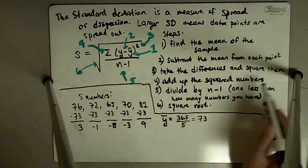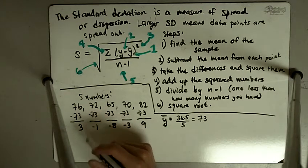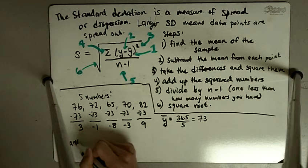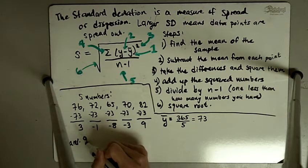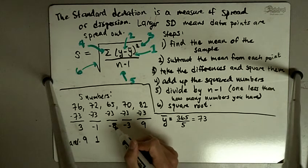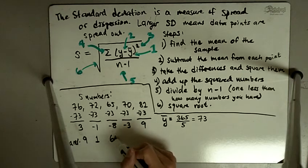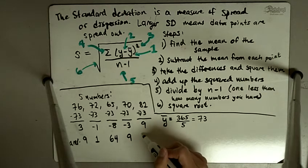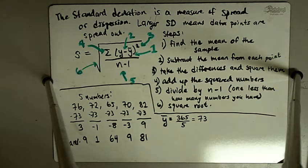So 3 squared, I'm going to just write the squares. 3 squared is 9. Negative 1 squared is 1. Negative 8 squared is 64. Negative 3 squared is 9. And 9 squared is 81.